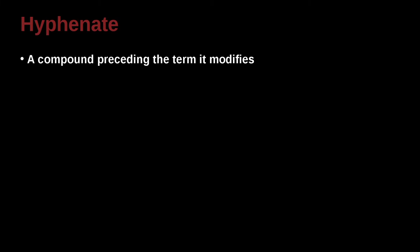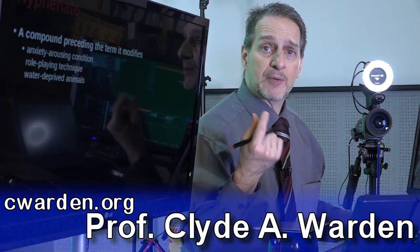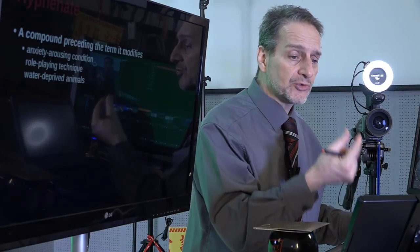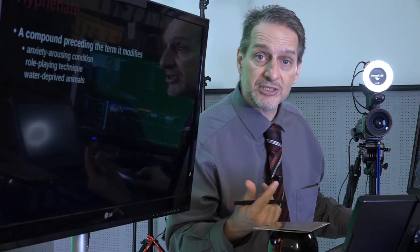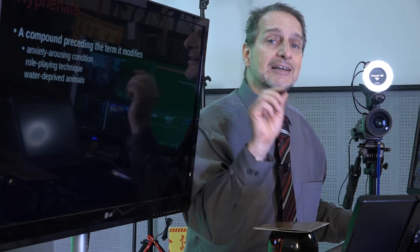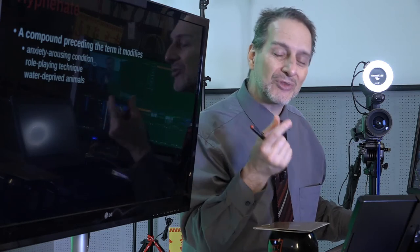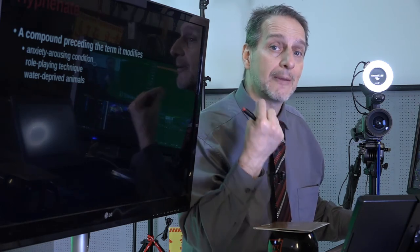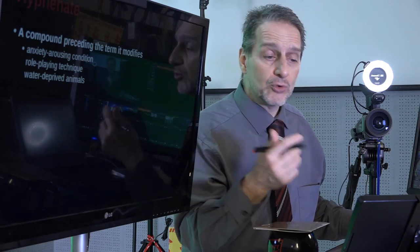You can hyphenate a compound word that's preceding the term it modifies. For example, anxiety-arousing condition or role-playing technique or water-deprived animals. Now these words are not going to be in a dictionary, because they're usually two separate words. We're putting them together because we're trying to modify the word that comes after them. So for example, the experimental condition. What is the experimental condition? It is anxiety and arousing. So anxiety is aroused, but these are two ideas, but they're not really two ideas in our experiment. They are one thing we're doing. They are one method, one technique we're using, one treatment. So in that case, we can go ahead and use the hyphen in order to help the reader read more smoothly.